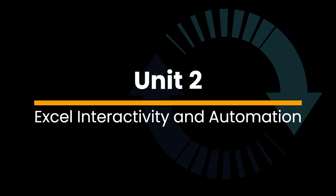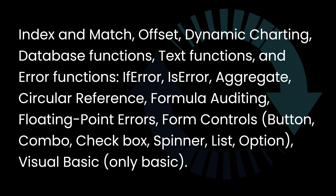Next is Unit 2: Excel Interactivity and Automation. Topics include Index and Match, Offset, Dynamic Charting, Database Functions, Text Functions, and Error Functions such as If Error and Is Error, Aggregate, Circular Reference, Formula Auditing, and Floating Point Errors.